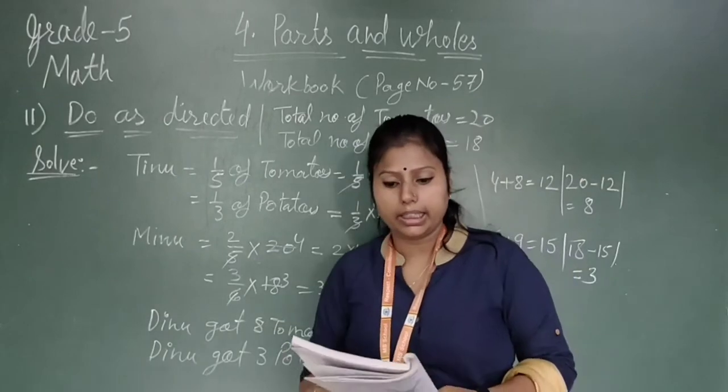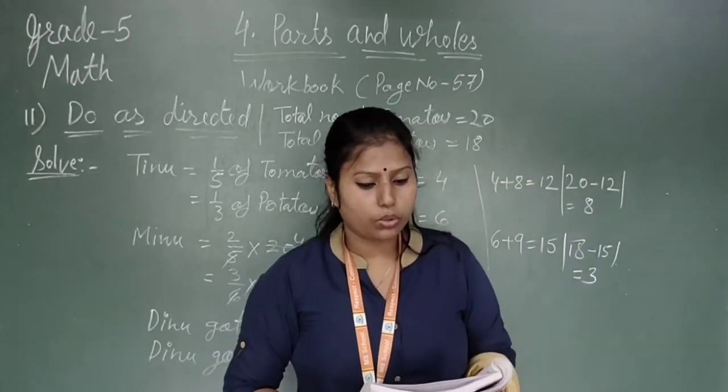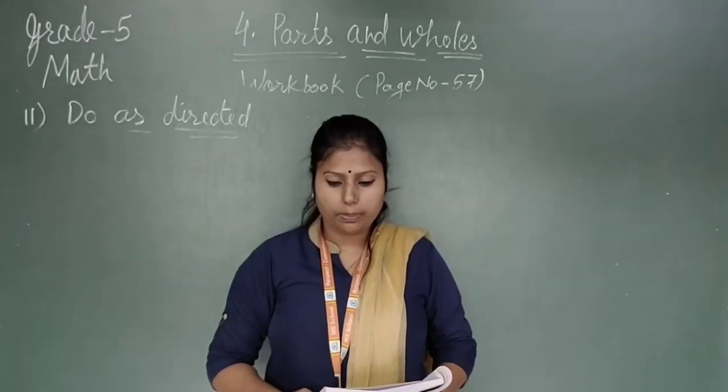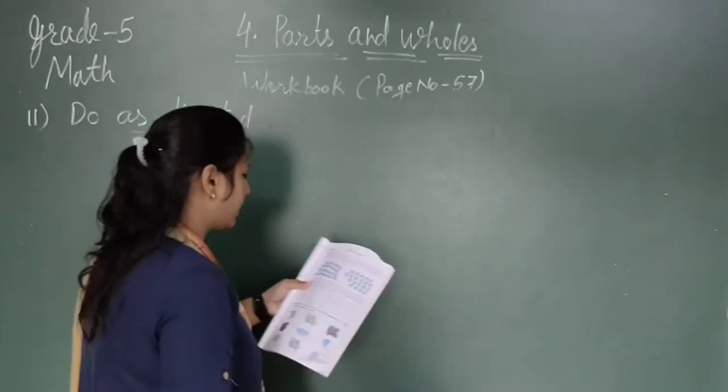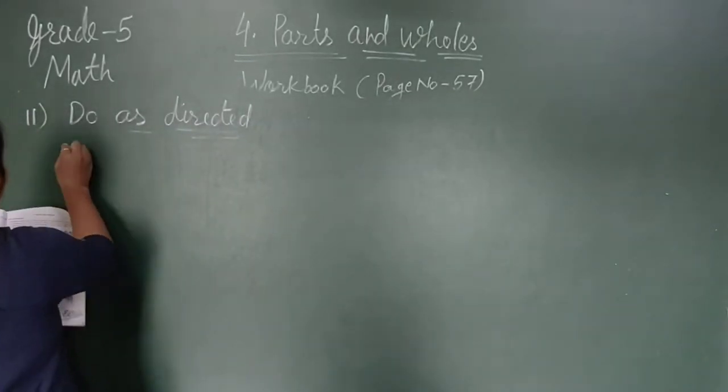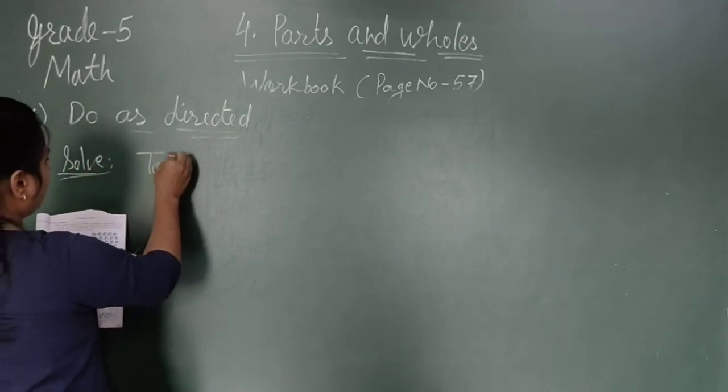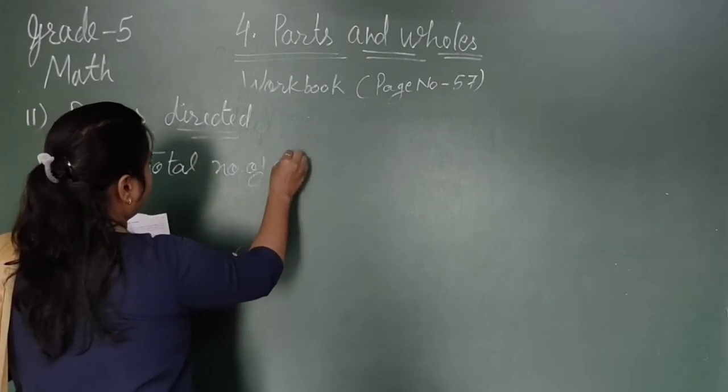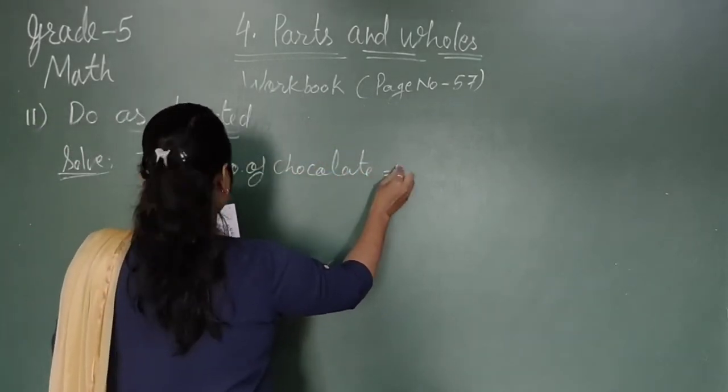I hope you understand how we can do the fraction when we will get the total number of particular vegetables. Now go for question number 2. Pinky wants to distribute 20 chocolates.